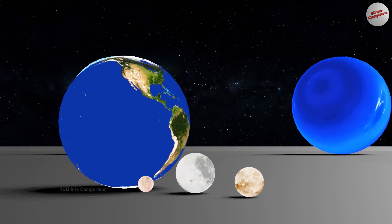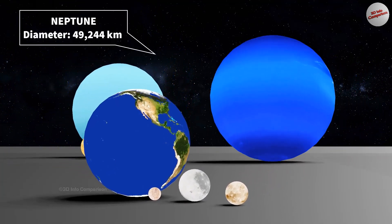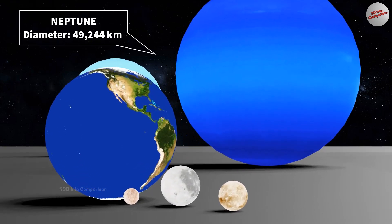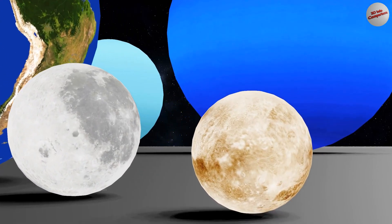Neptune is the eighth and farthest known planet from the Sun in our solar system. It is a gas giant and has a diameter of approximately 49,244 kilometers.